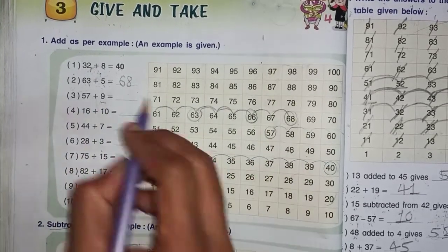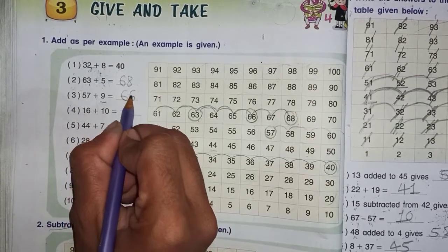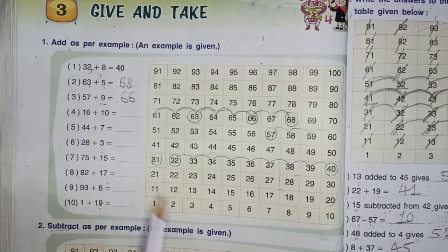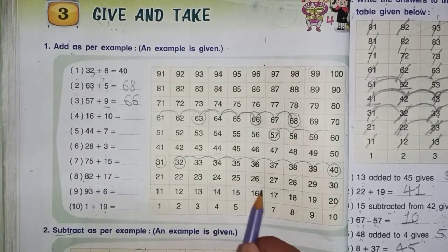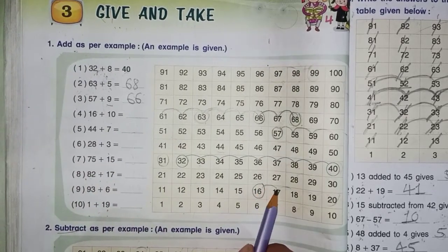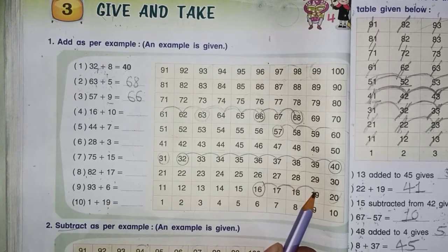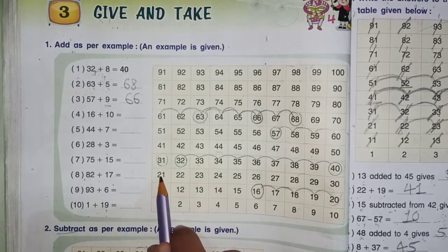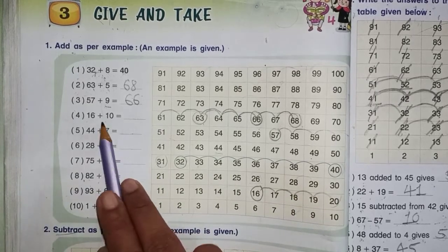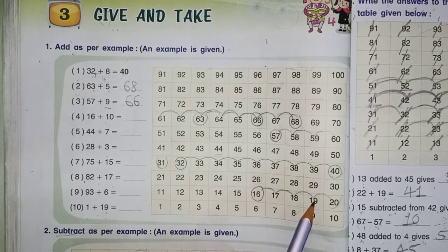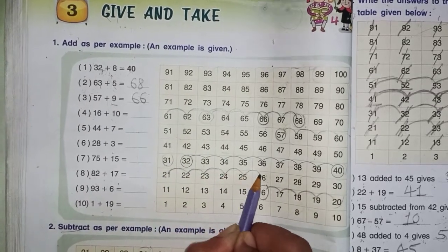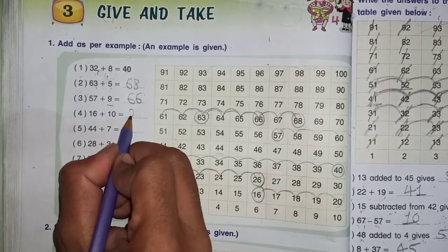Maybe we have to add as per example. So here 50 starts, here not. 20 comes to 21, so here start. How many to go? 10. Count 1, 2, 3, 4, 5, 6, 7, 8, 9, 10. So here 26 will be the answer.